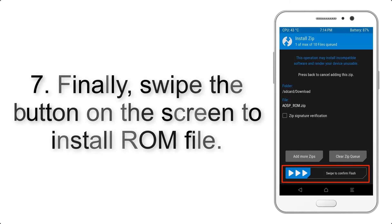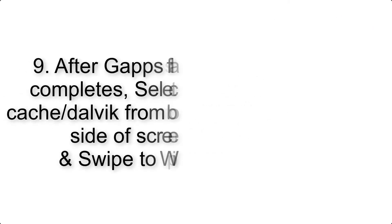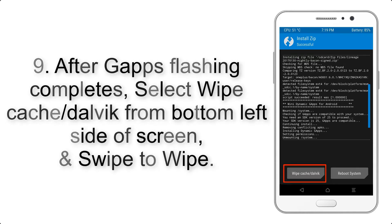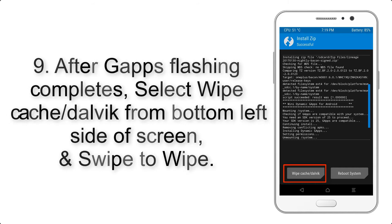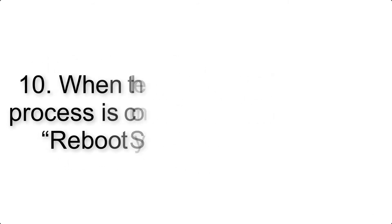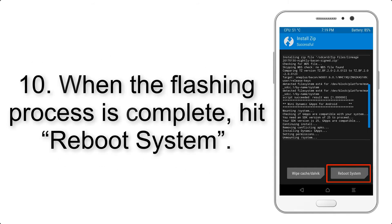Step 7: Swipe the button on the screen to install the ROM file. Step 9: After Gapps flashing completes, select Wipe Cache and Dalvik from the bottom left side of the screen and swipe to wipe. Step 10: When the flashing process is complete, hit Reboot System.